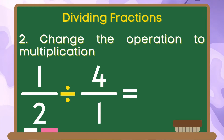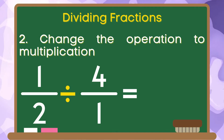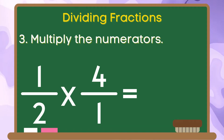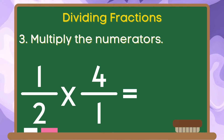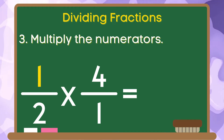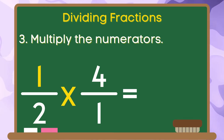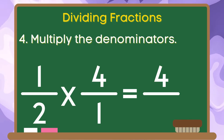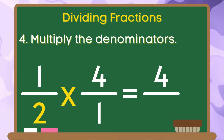For step 2, we are going to change the operation division to multiplication. For step 3, we are going to multiply our numerators. 1 times 4 is equal to 4. Step 4, we are going to multiply the denominators. 2 times 1 is equal to 2.